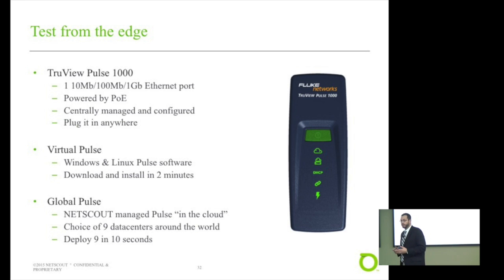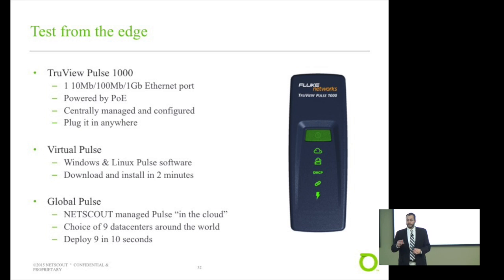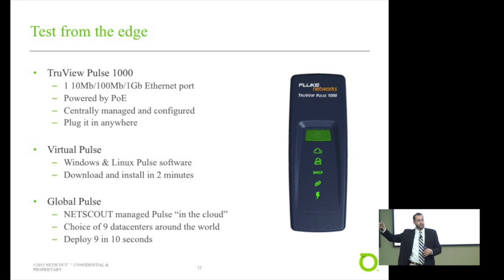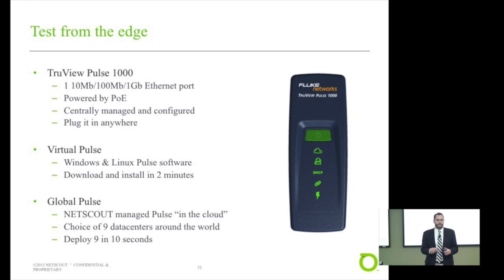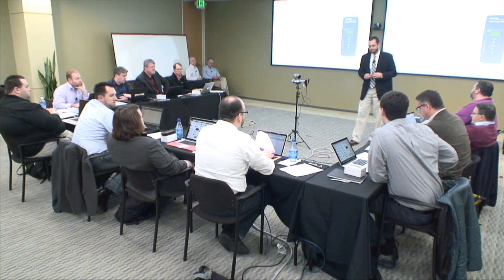That's not the only deployment option we have. We also have a software version — the same software that's in the hardware Pulse. We call that a virtual Pulse. Download the software for Windows or popular Linux distributions from TrueViewLive.com. If you have your own hardware you want to put it on, install it on your own hardware. If you want to send it to somebody else, you can send an email from the service and we'll send an email to whoever you want to download it and put it on a machine for you. It's not a VM form factor — it's literally the package itself.